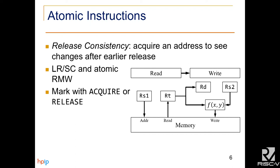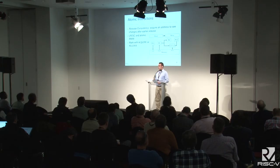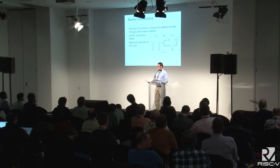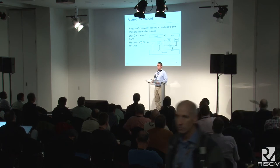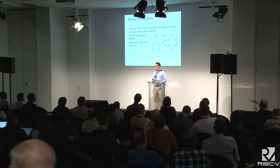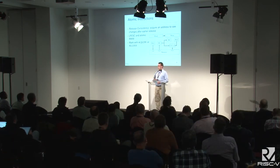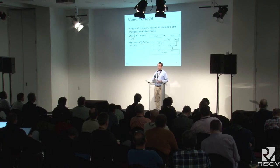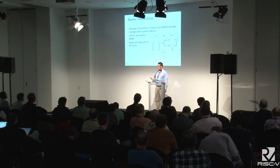RISC-V provides load reserved and store conditional instructions, and atomic read-modify-write instructions that can all be marked with acquire or release flags that GEM5 has built in. A challenge for implementing this extension was that each atomic instruction has two memory transactions — a read and a write — which GEM5 does not support for the most part in a single instruction.